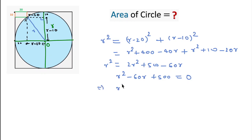We can solve this as R squared minus 50R minus 10R plus 500 equals 0. If we take R common, then R minus 50, and if we take minus 10 from these two terms, then we can write R minus 50. This is equal to 0, so R minus 50 equals 0 and R equals 10. We get two values: R as 50 and R as 10.